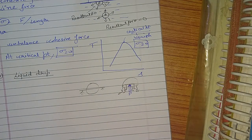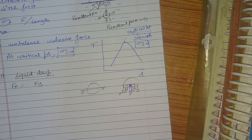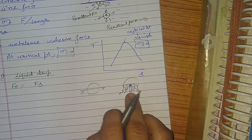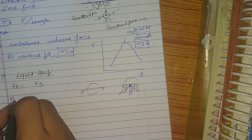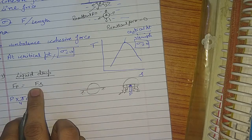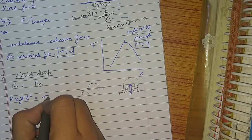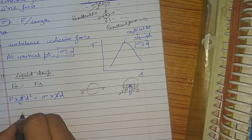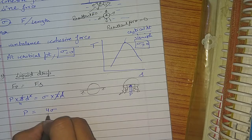So at equilibrium, the pressure force will be equal to the force due to surface tension. Force due to pressure equals P into area. Surface tension force equals sigma into circumference, which is sigma into pi·d. Solving, P will be equal to 4σ/d.